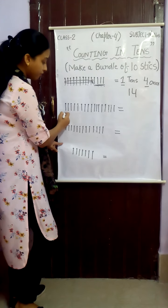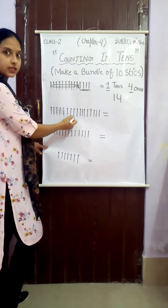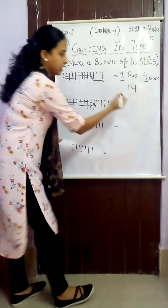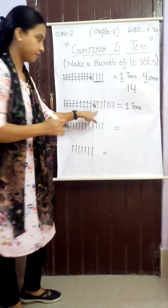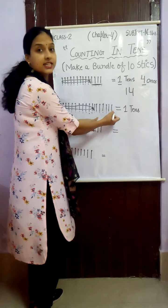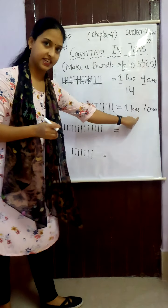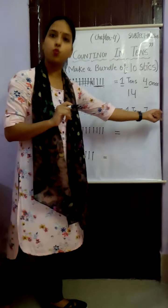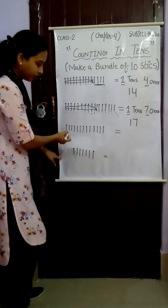Now we will again make a bundle of ten sticks. Let's count together: 1, 2, 3, 4, 5, 6, 7, 8, 9, 10. Here a bundle of ten sticks is ready — that is one ten. But there are still some loose sticks remaining. Let's count them: 1, 2, 3, 4, 5, 6, 7 — so there are seven ones. We read this as one seven, seventeen. How many total sticks? Seventeen.